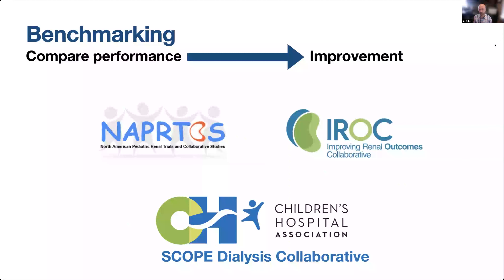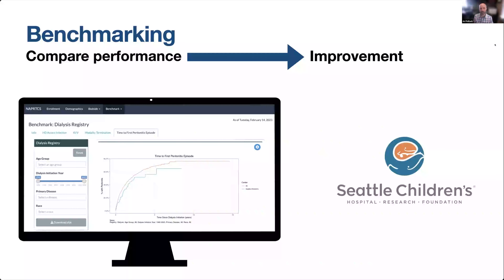We participate in a variety of collaboratives, all designed to improve the lives of kids with kidney disease. There's NAPROTICS, another collaborative called Improving Renal Outcomes which is really a transplant collaborative, and then SCOPE, which is looking at improving outcomes for kids on dialysis and reducing infectious complications. These tools have been very helpful for us and others to improve outcomes for the patients we take care of.